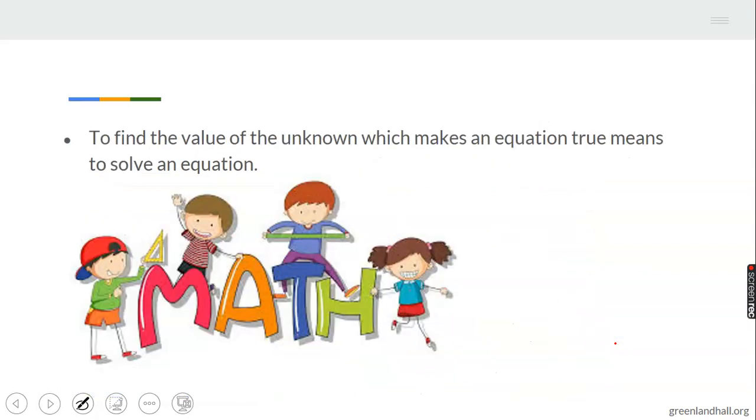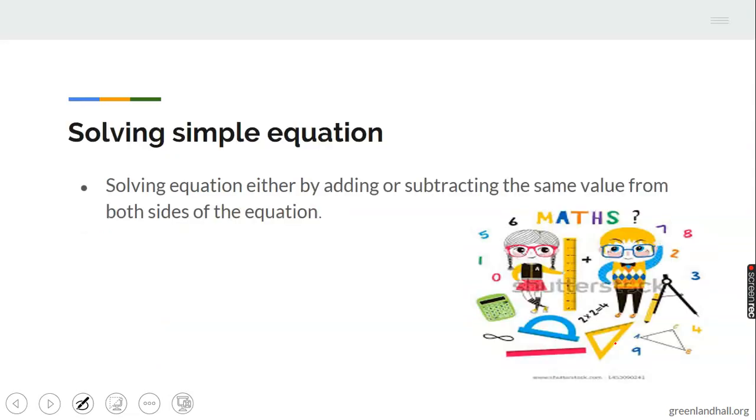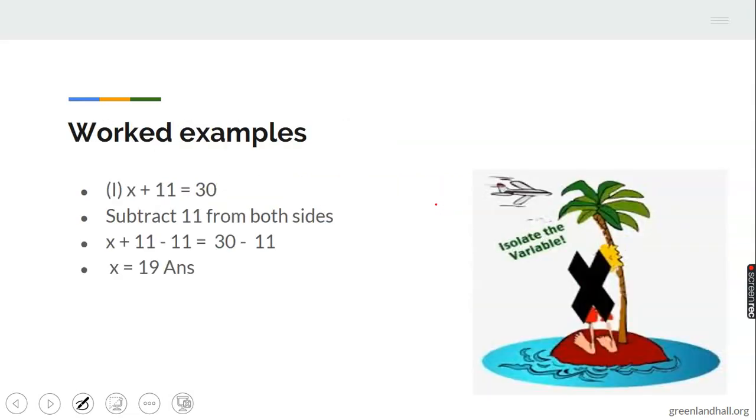To find the value of the unknown which makes an equation true means we have to solve that equation. Simple equations can be solved by subtracting or adding. Let's check an example: we have x plus 11 equals 30. You can see this is an algebraic equation because it has letters and numbers. We want to make x standalone because we're looking for what number you add to x to give you 30.